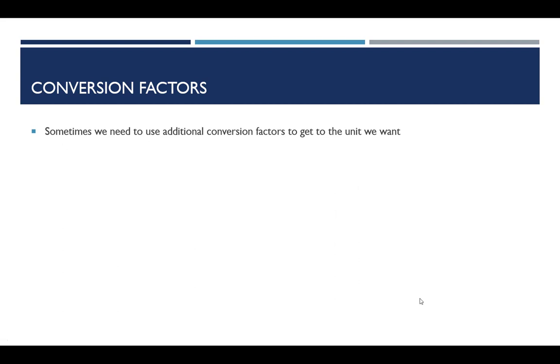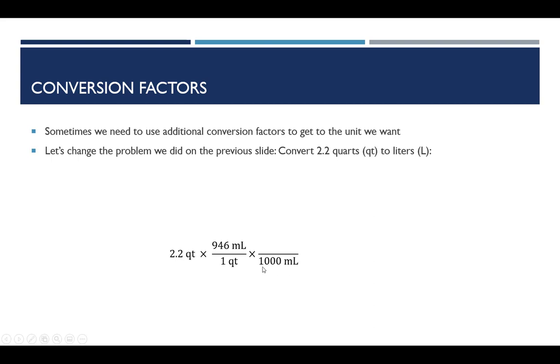And then sometimes one conversion isn't enough. Sometimes we need to tack on additional conversion factors. So I want to change that last question to convert 2.2 quarts to liters instead of to milliliters. So we've already done this part of the problem. We've converted quarts to milliliters. Now I want to convert milliliters to liters. And I know that 1,000 milliliters is a liter. So the milliliters I've got in the denominator so they will cancel. One liter in the numerator. And quarts have cancelled. Milliliters have cancelled. I'm left only with liters. And this will come out to 2.1 liters when we have our two significant digits.